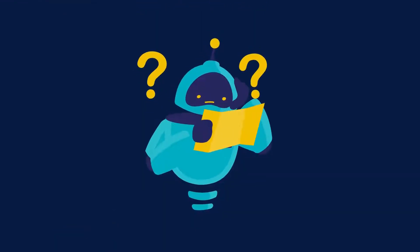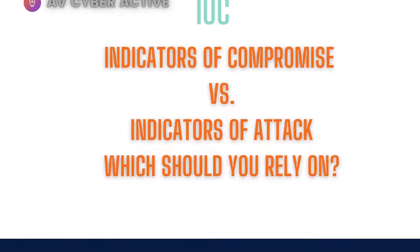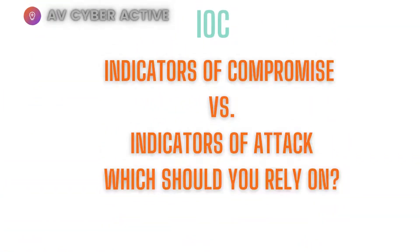At this point you might be wondering which one is better — Indicator of Compromise or Indicator of Attack — and which one to rely on. Since there's no clear answer, it's always recommended to have proper controls in place so you can detect both IOAs and IOCs.